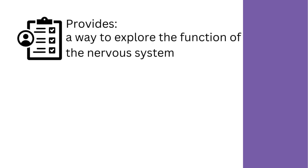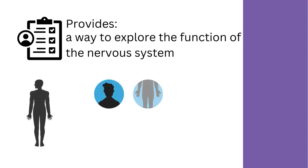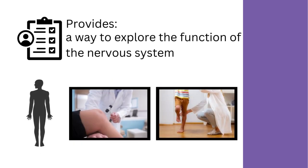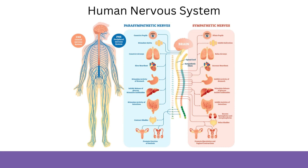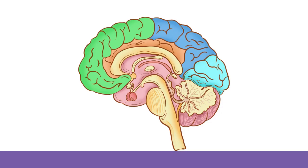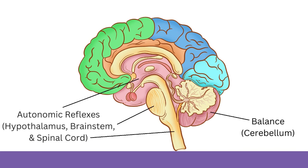A neurological exam provides a physician with a way to explore the function of the nervous system by seeing how different parts of the body respond to different stimulus and tasks. This is because the nerves of the human body have been carefully mapped out, so we know where nerves that carry sensation from and muscle commands to different parts of the body enter the spinal cord. We also know what parts of the brain control different things like balance and autonomic reflexes.